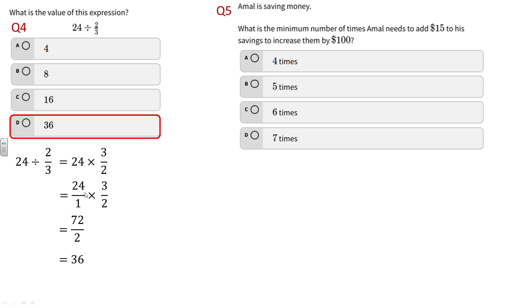Another way you could do this: if you look at the answers 4, 8, 16, and 36, you're dividing 24 by two thirds, which is smaller than one, so it should go into 24 more than 24 times. If I was dividing 24 by 1 the answer would be 24, but I'm dividing it by something smaller so the answer will be larger than 24.